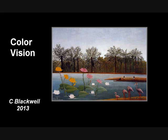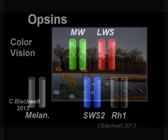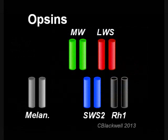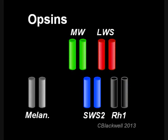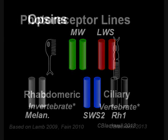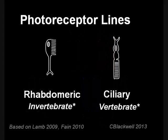This video is not strictly about color vision. Rather, we are continuing the story of the opsins by introducing melanopsin. To understand where that comes from will require us to take a look at different types of photoreceptors as seen in vertebrate versus invertebrate animals.